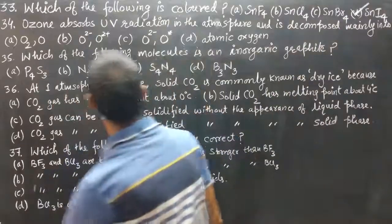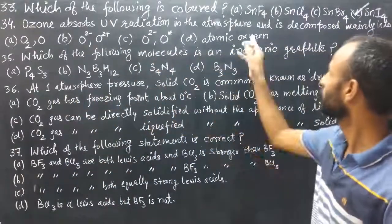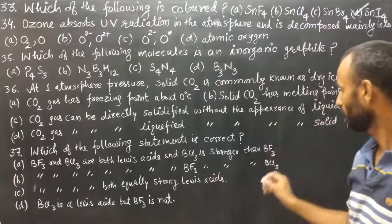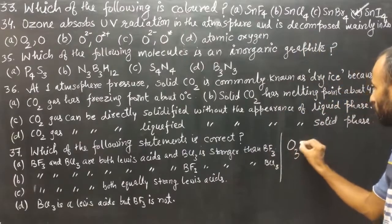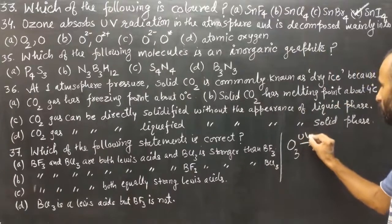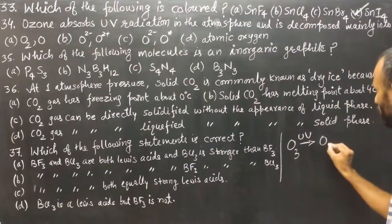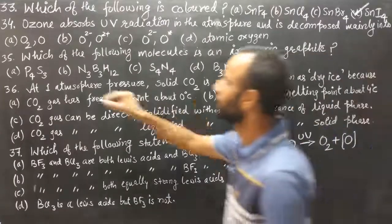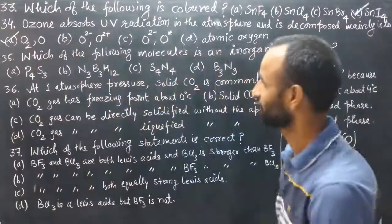Question 34: ozone absorbs UV light in the atmosphere and is decomposed. When ozone is decomposed, it gives O2 along with nascent oxygen [O]. So option A is correct.